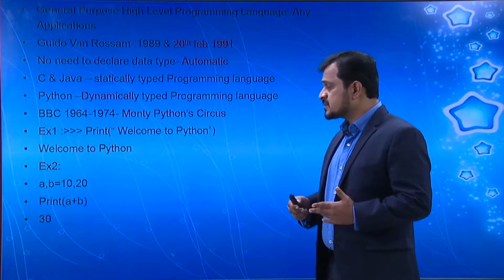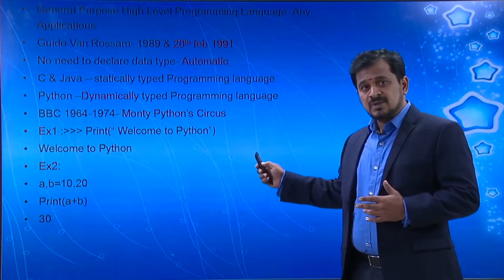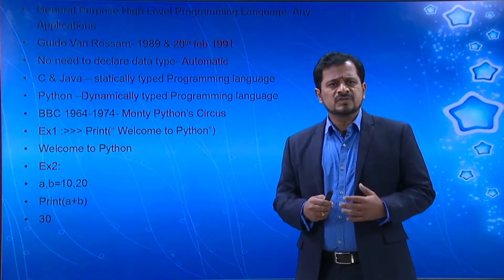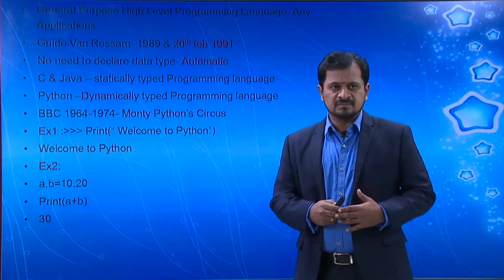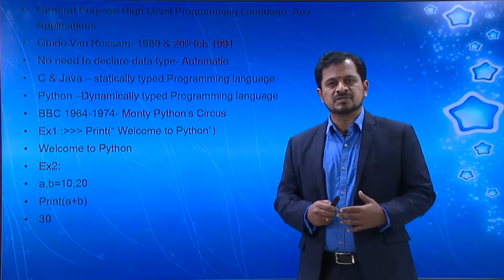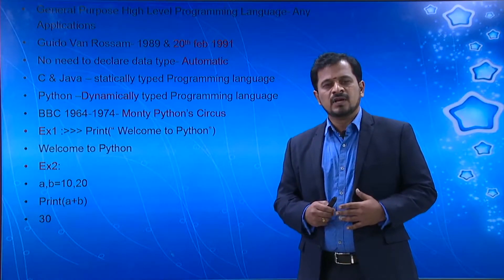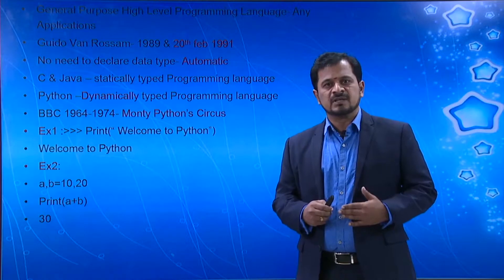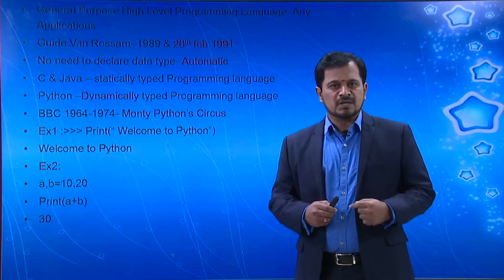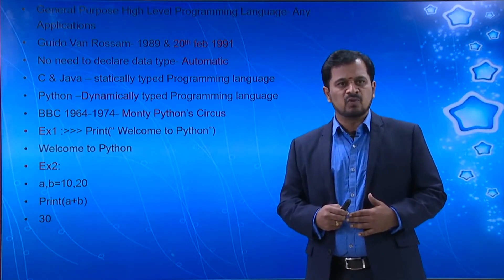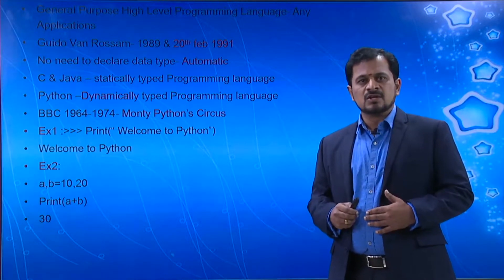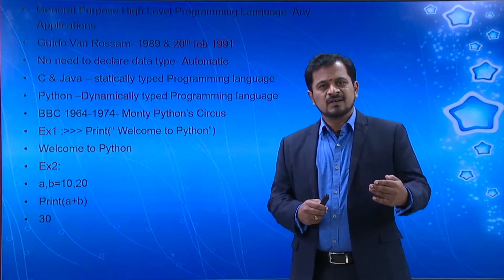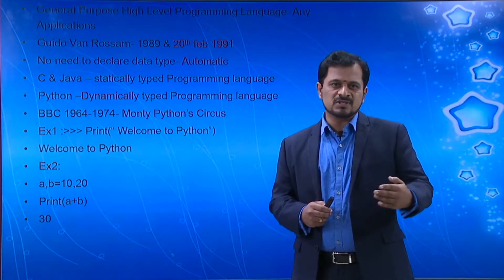Now, how was this name 'Python' given? From 1964 to 1974, there was a very famous program on BBC that was telecasted for close to a decade. That program's name was Monty Python's Flying Circus. Based on that, Guido Van Rossum gave the name Python to this software language.